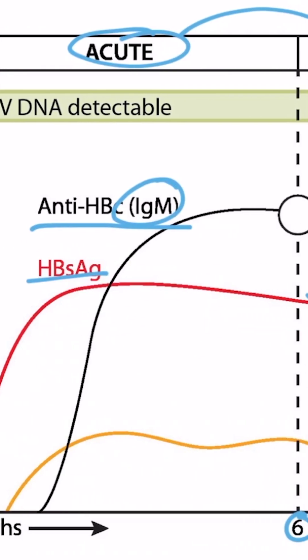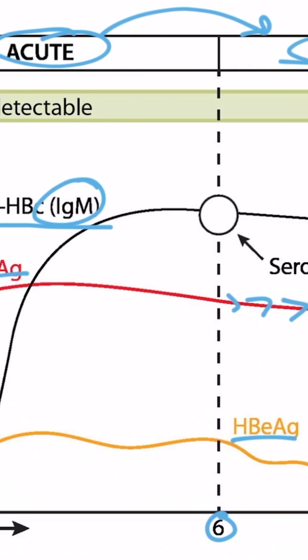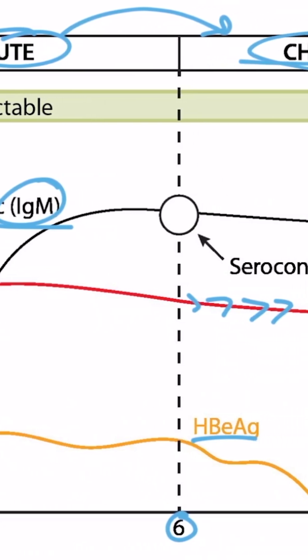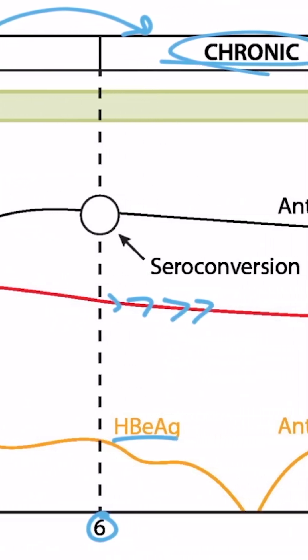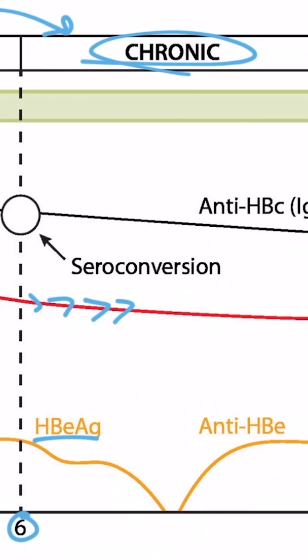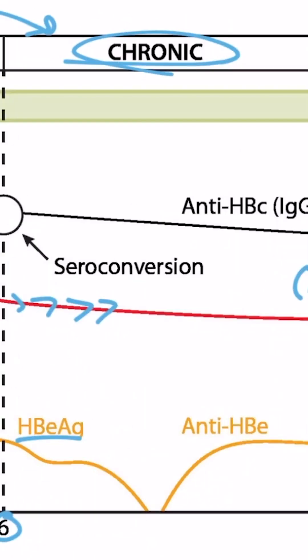Now looking at the E antigen line — the yellow line — we notice that it didn't dip down at the five to six-month mark as it did in the previous diagram. Instead, it continues for a while into the chronic phase and doesn't dip down until well into this phase, at which point the patient develops antibodies against the E antigen. This makes sense because the patient was unable to clear the infection as normal, so the virus continues replicating longer than expected.